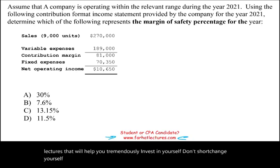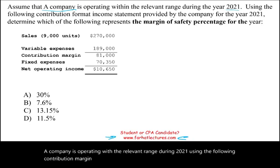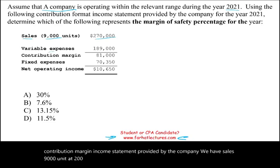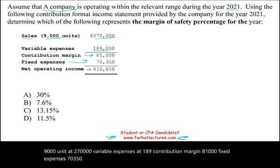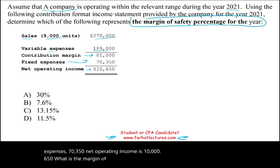Assume a company is operating within a relevant range during 2021 using the following contribution margin income statement. We have sales of 9,000 units at $270,000, variable expenses at $189,000, contribution margin of $81,000, fixed expenses of $70,350, and net operating income of $10,650. What is the margin of safety for the year?